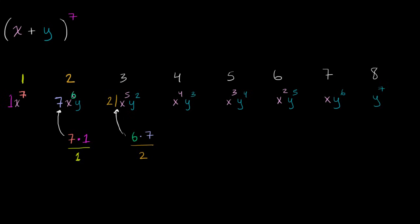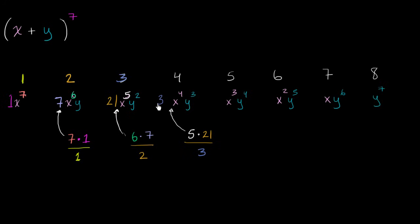For the fourth term, same idea: go to the previous term, the x-exponent is five, multiply by the coefficient 21, then divide by three — which is the third term's index. Five times 21 over three: 21 over three is seven, so five times seven equals 35.